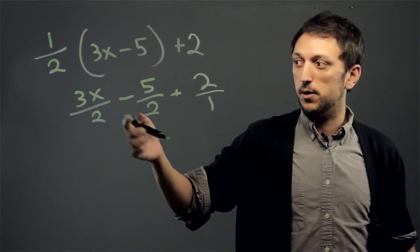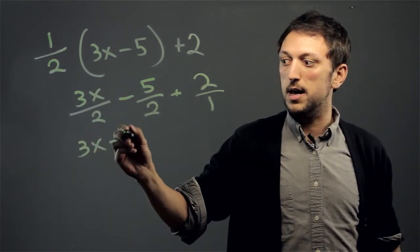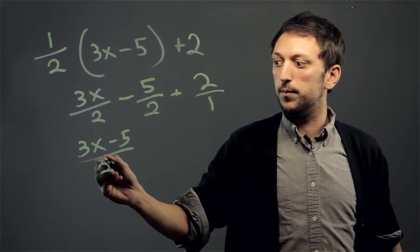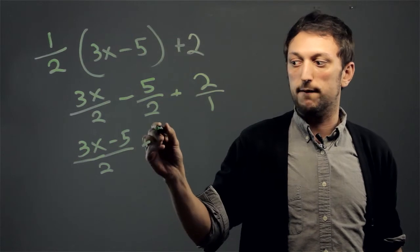So really all you have to do now is make this all one fraction. So it's 3x minus 5 over 2. And we can convert 2 over 1 to 4 over 2.